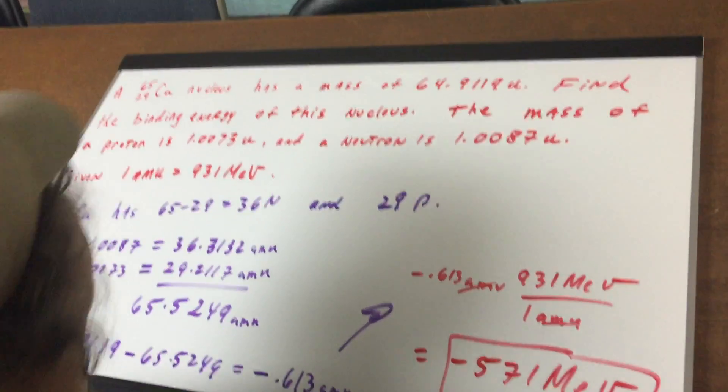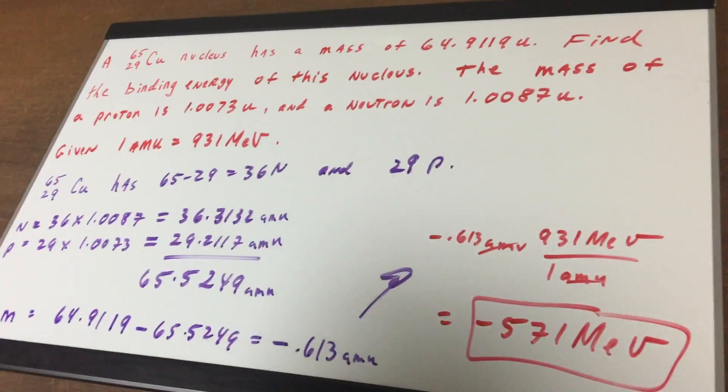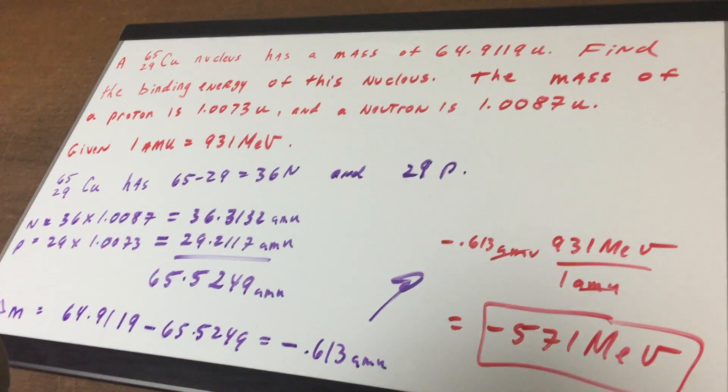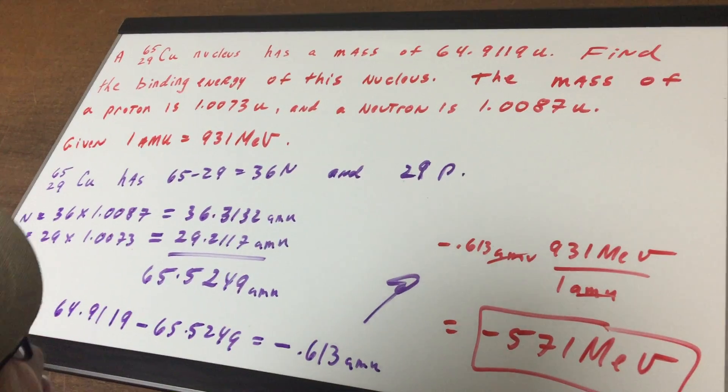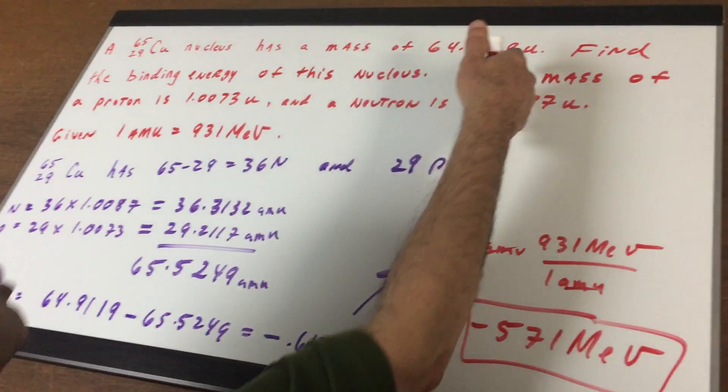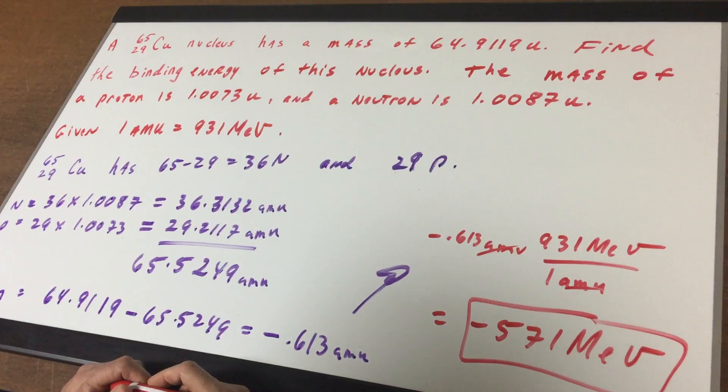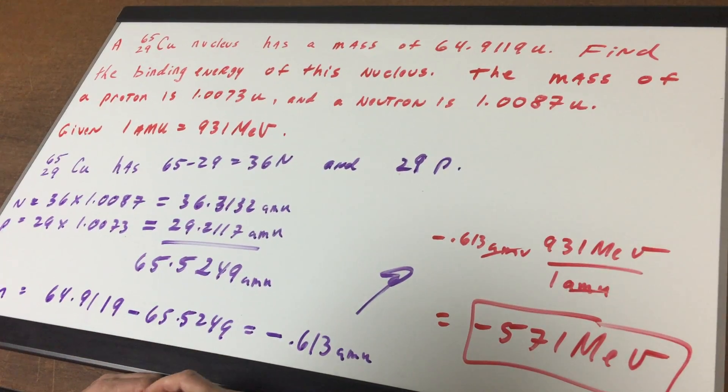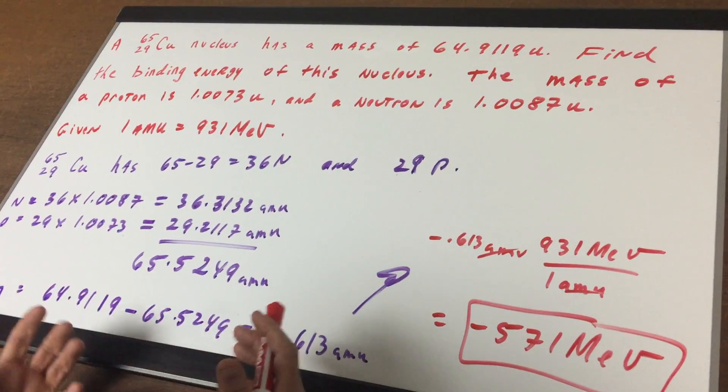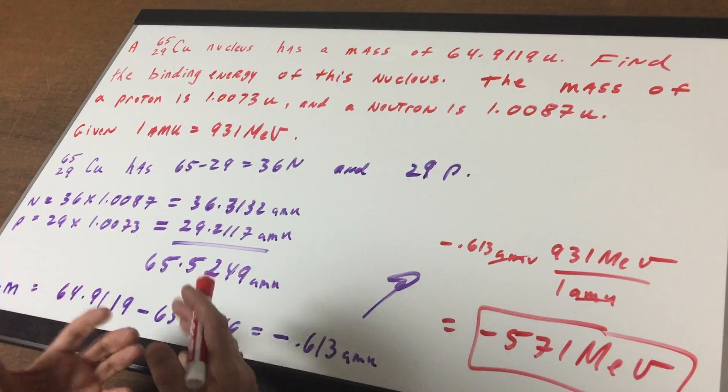We have a copper-65-29 nucleus with a mass of 64.9119 atomic mass units, or AMU. What I want to do is find the binding energy of this nucleus, meaning the amount of energy required to make the nucleus.